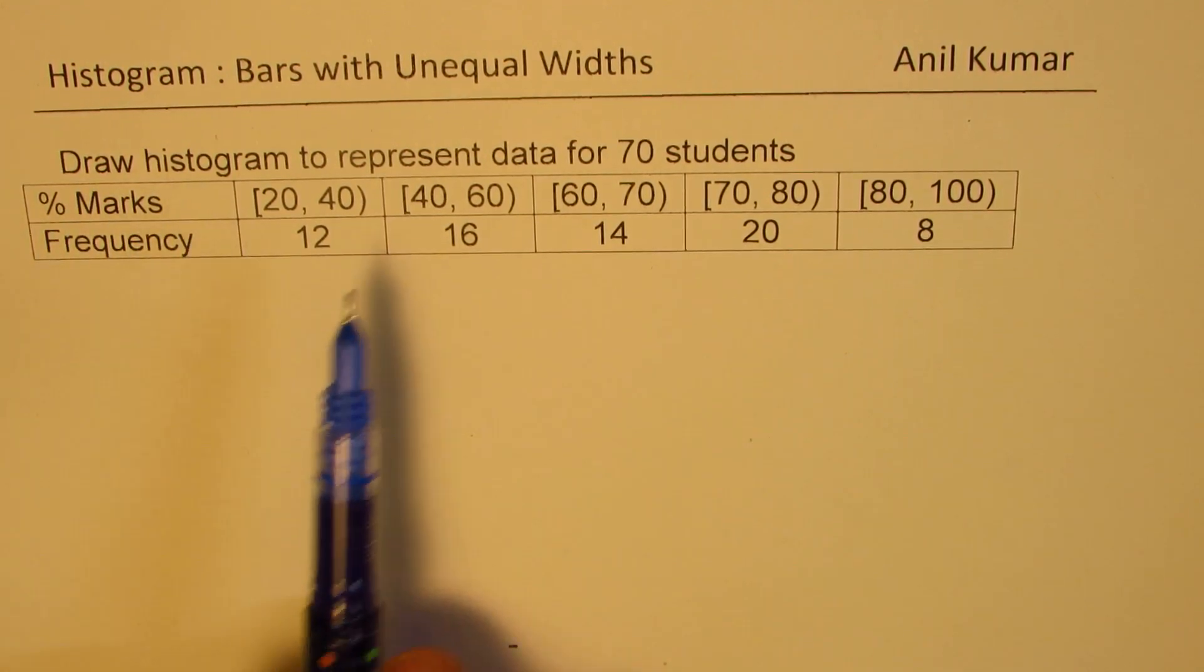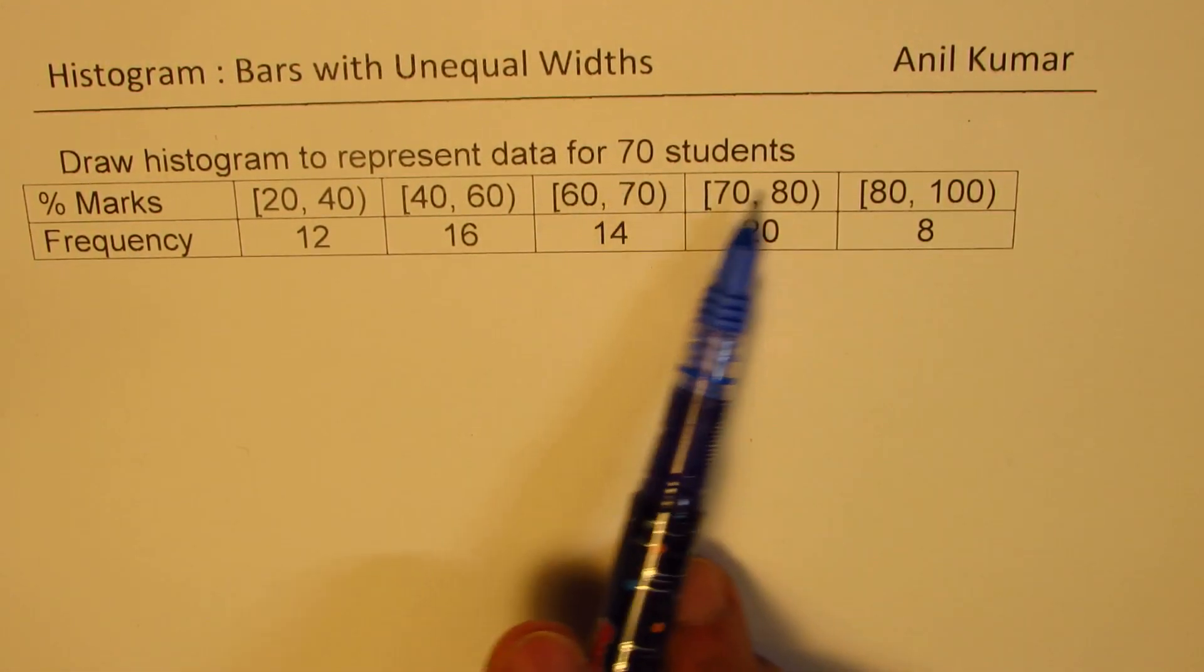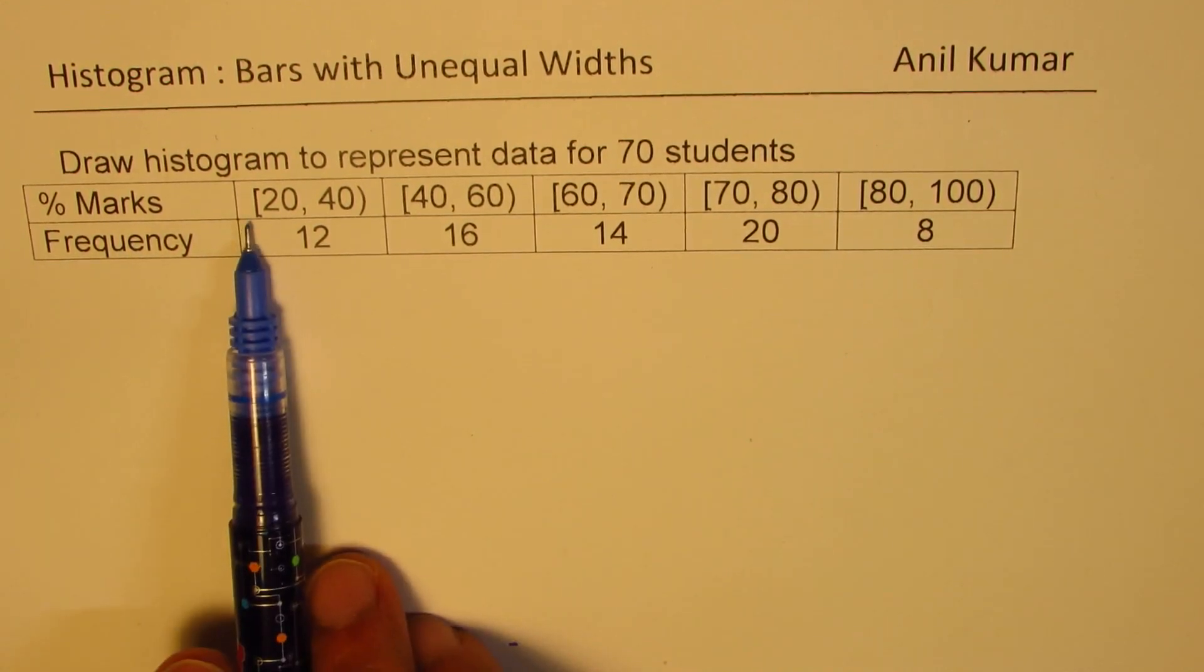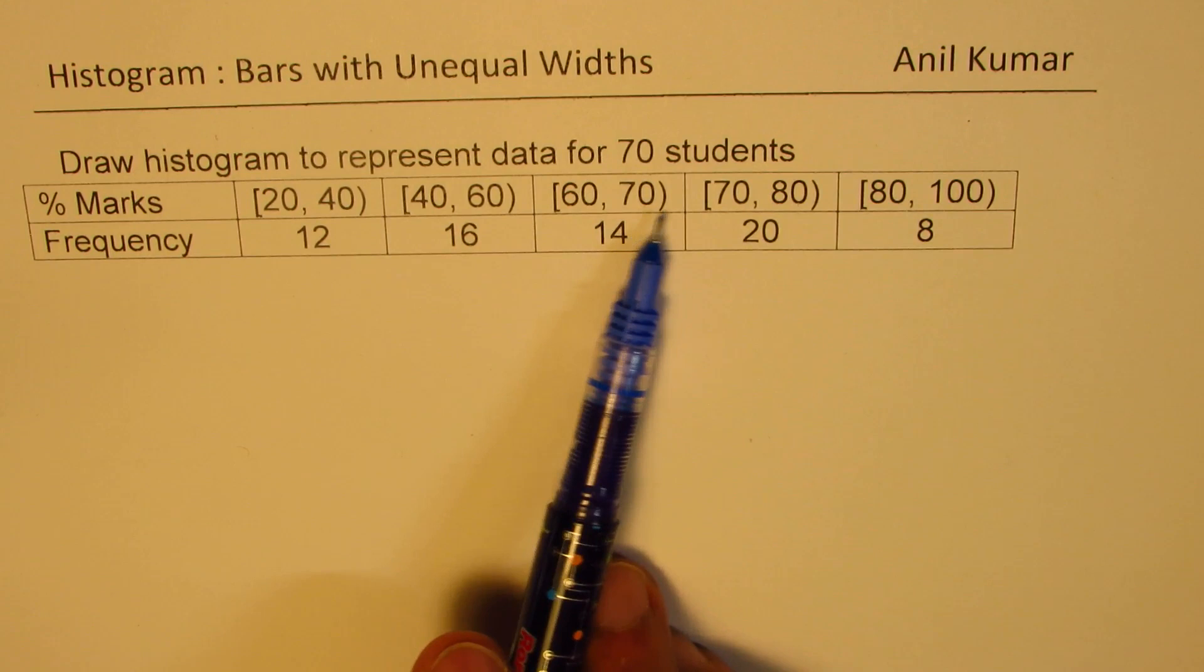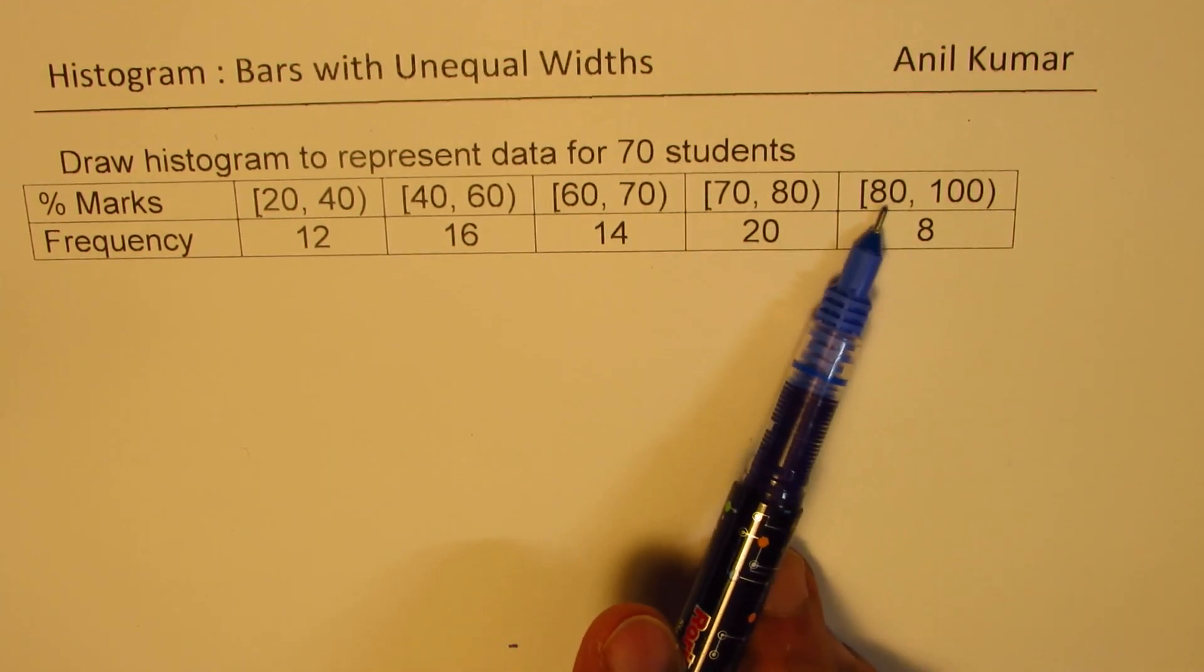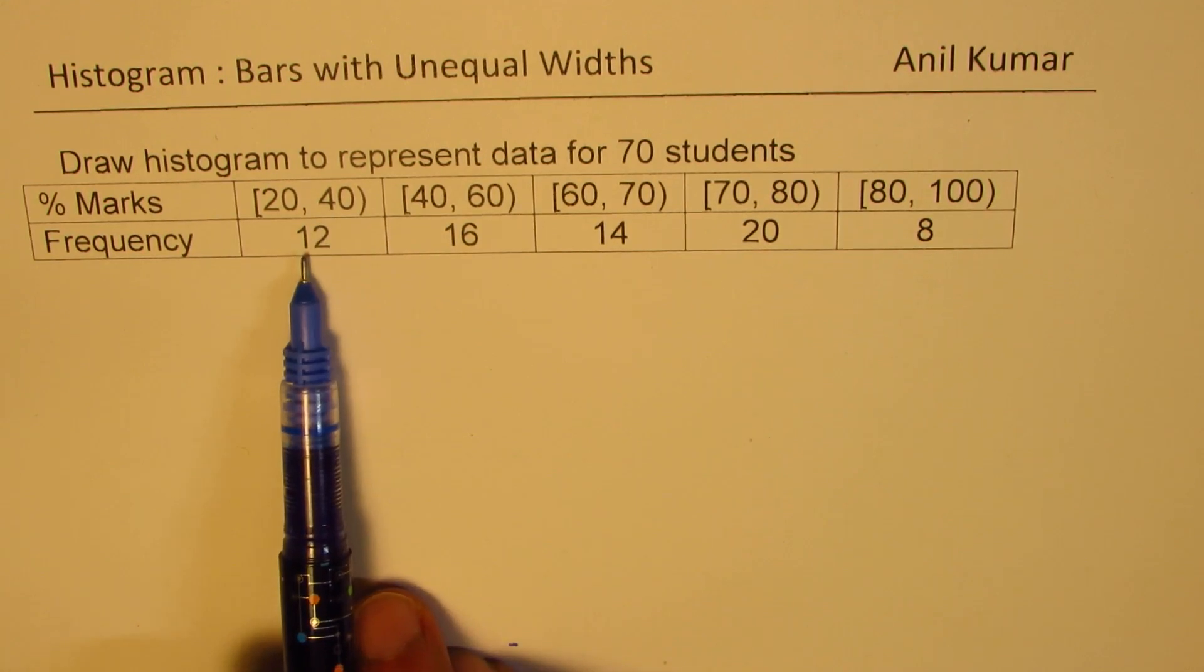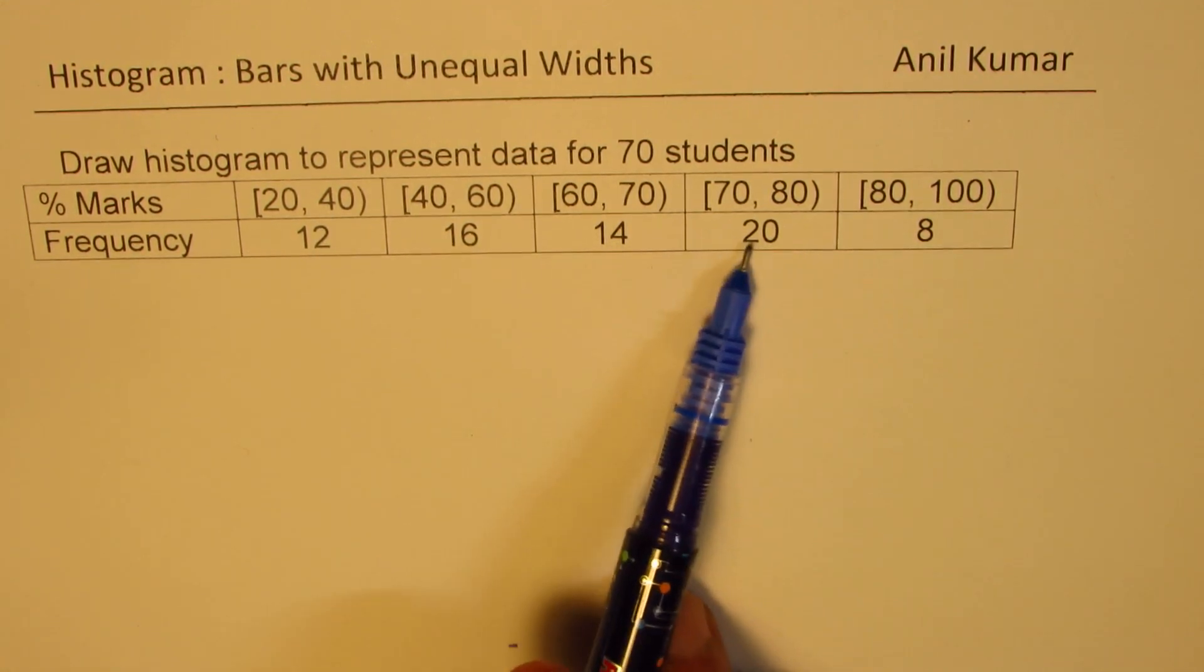The question is to draw a histogram to represent data for 70 students. The marks given are in intervals: 20 to 40, 40 to 60, 60 to 70, 70 to 80, and 80 to 100. The frequencies are 12, 16, 14, 20, and 8 respectively.